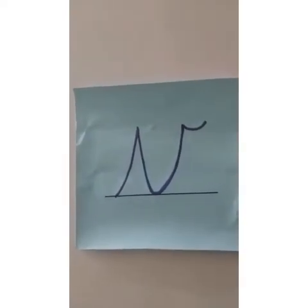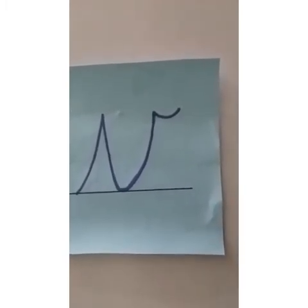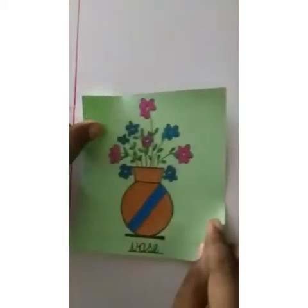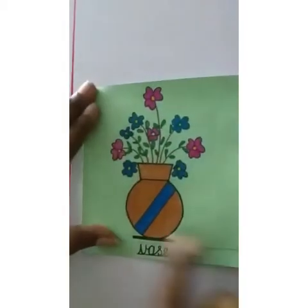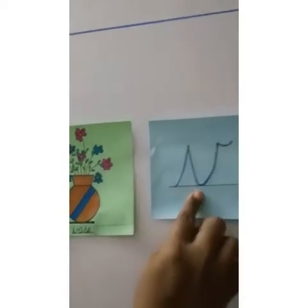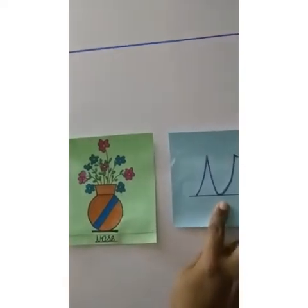And now teacher is going to show you the object which begins with the letter V. Look at this picture. Can anyone guess? This is V for vase.